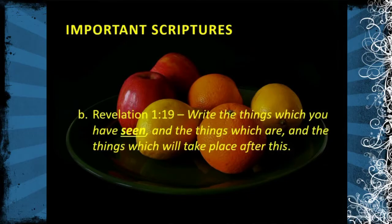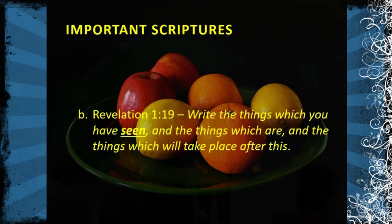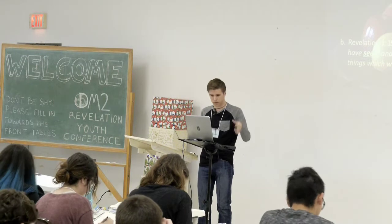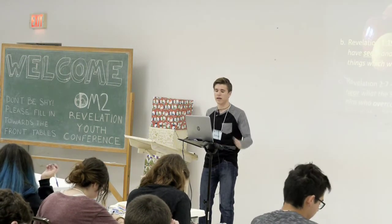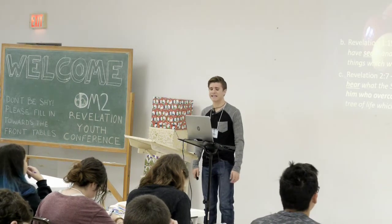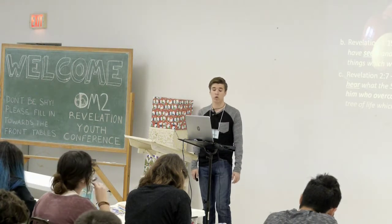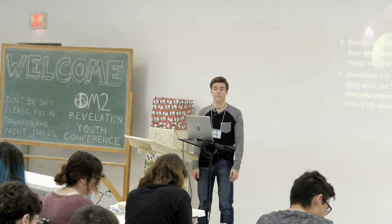Revelation 1:19 says: 'Write the things which you have seen and the things which are and the things which will take place after this.' This is the outline verse for Revelation — like three points in an essay. First it will talk about what Jesus looked like when speaking to John; then it talks about the current state of the churches the book is written to; and finally, the majority of the book about the end times.